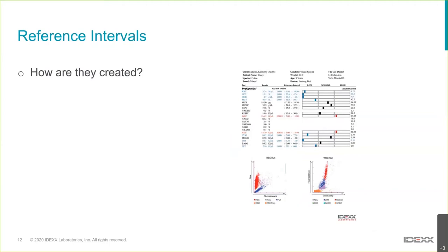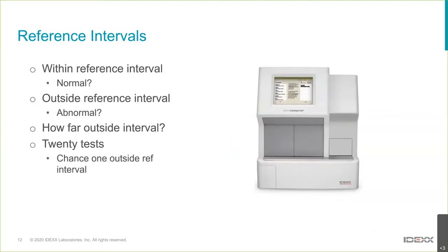So does a result within the reference interval guarantee it's normal? Not always. There are times we can get a normal result where it shouldn't be — for example, a patient with hypoadrenocorticism might have a normal leukogram, but if it's a sick patient it should show a stress leukogram. So sometimes normal is not always normal.